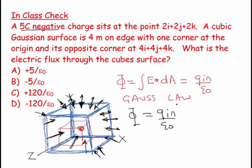And this is simply equal to Q in over epsilon naught. Q in means, what's the charge inside? And the charge inside is minus 5 over epsilon naught.